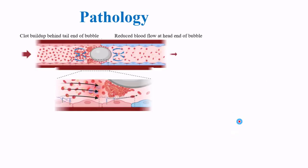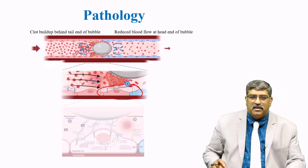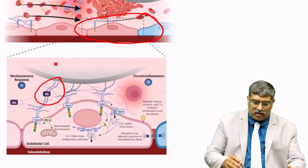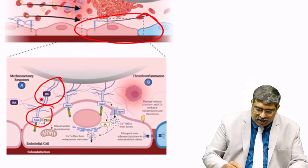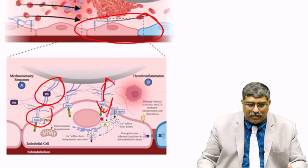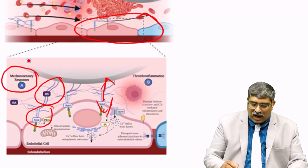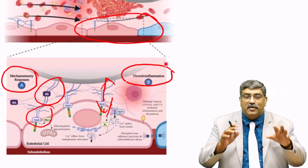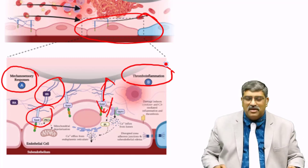If you look further at the level of endothelial cells, there is a release of heparan sulfate, which is a part of the larger proteoglycan called syndicans. What happens is a connection between the emboli and endothelial cells occurs and there is a mechanosensory response, and your complementary and inflammatory mediators will also be activated, leading to thromboinflammation in the venous system.